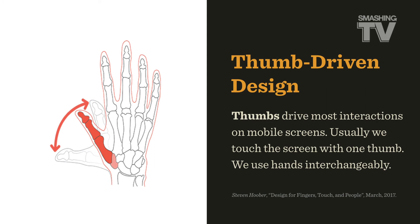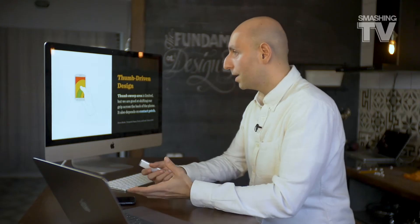Thumbs drive most interactions on mobile screens. Usually we touch the screen with only one thumb. We can't just design for right-handed people because most people are right-handed — we tend to use hands interchangeably. Sometimes we'll be carrying a bag in one hand and holding the phone in the other. At the same time, the thumb sweep area is quite limited, so some spots on the screen are more accessible than others.